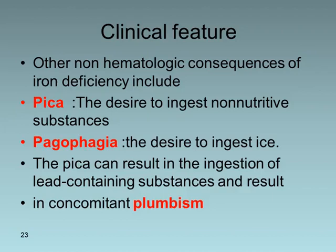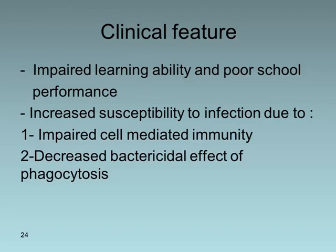Other non-hematological consequences include pica — the desire to ingest non-nutritive substances — and pagophagia, which is the desire to ingest ice. Pica can lead to ingestion of lead-containing substances, resulting in concomitant lead poisoning (plumbism). In school-age children there is impaired learning ability and poor school performance. There is also increased susceptibility to infection due to impaired cell-mediated immunity and decreased bactericidal activity of phagocytes.